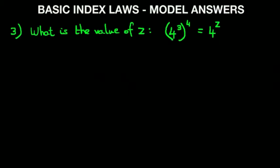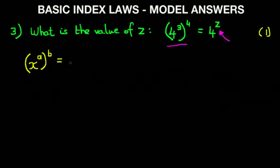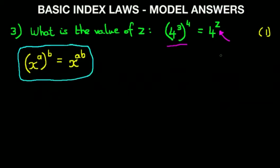Now let's move on to our next question: what is the value of z? We have 4 to the power of 3, in brackets, to the power of 4, equals 4 to the power of z. This would typically be a one mark question. The rule which applies here is x to the power of a, in brackets, to the power of b, equals x to the power of a times b — we simply multiply the two powers together. Let's circle the rule.